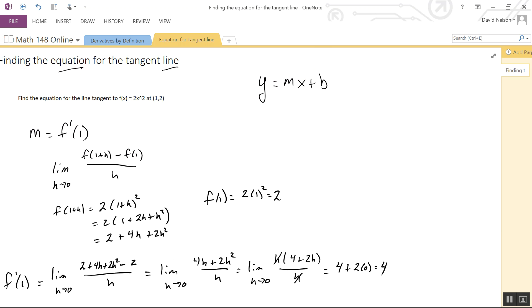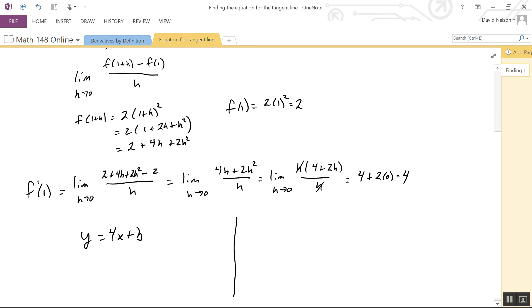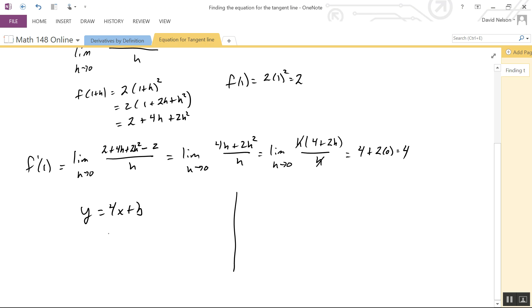Our tangent line is at the point (1,2), so in this equation, when x equals 1, y has to equal 2. When I put in 1 for x, I need to get out 2 for y.